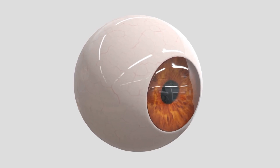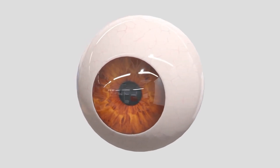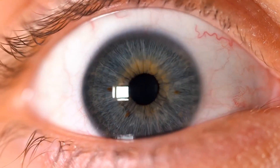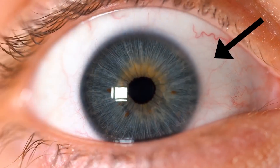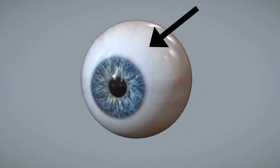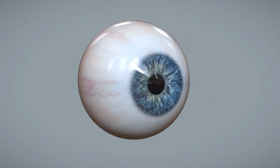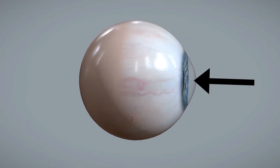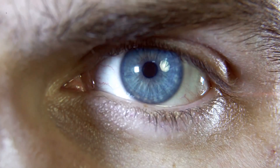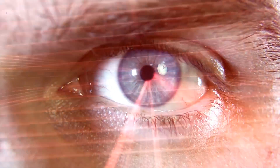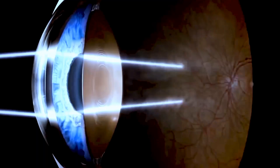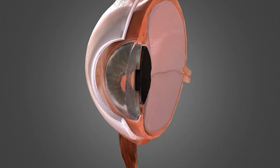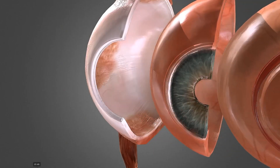Three layers of tissues are present in the eye. The outermost is the fibrous layer, which consists of the sclera and cornea. The sclera is the wide part present in the outer layer and maintains the shape of the eye. The cornea is also present in the outer layer and refracts light rays. The cornea has a convex shape.